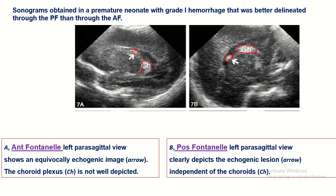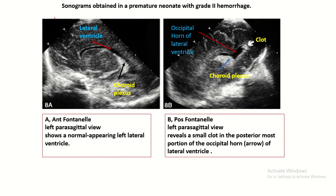This sonographic picture through the anterior fontanelle approach shows the lateral ventricle and the choroid plexus with no sign of hemorrhage. But through the posterior fontanelle approach, the occipital horn of the lateral ventricle and the posterior end of the occipital horn can be clearly visualized — here there is a clot present.